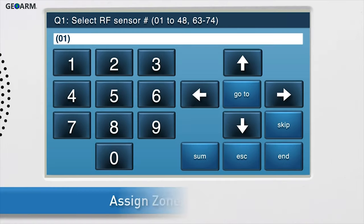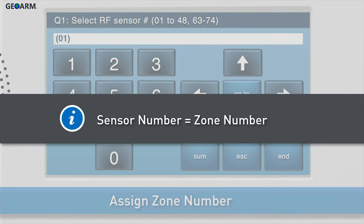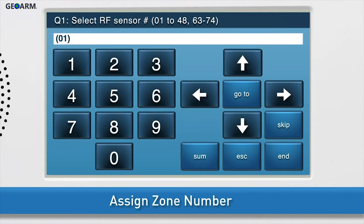First, you will decide which zone number to assign to the TakeOver module input you are currently programming. Note, the words Sensor and Zone are interchangeable. In this training, we will use the term Zone Number. By default, we are already on the correct sub-question to select the zone number.